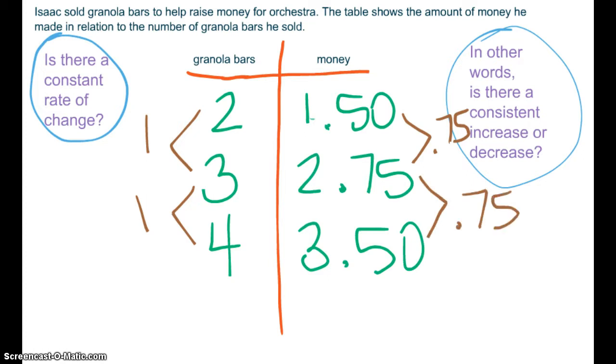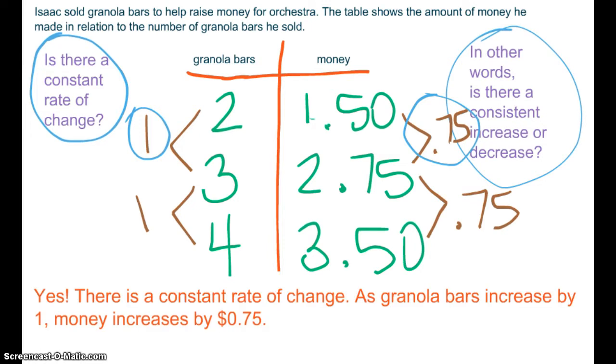Do you think that there is a constant rate of change? Yes. As we increase by $1, we are increasing by $0.75. Yes, there's a constant rate of change. Because as granola bars increase by $1, money increases by $0.75.